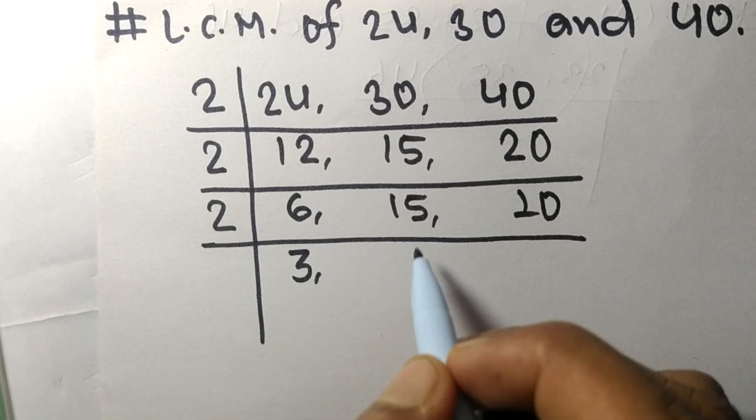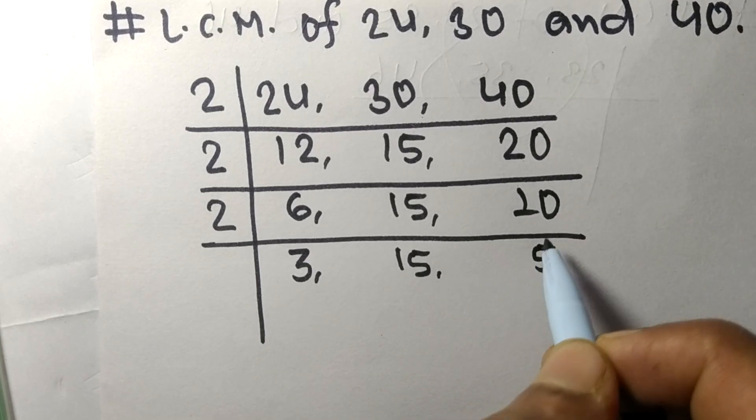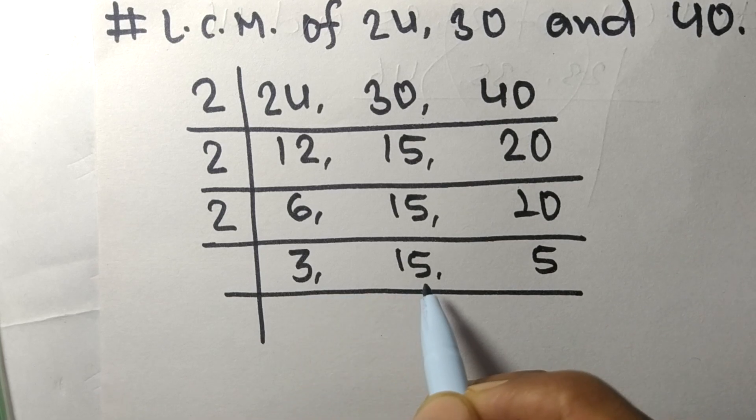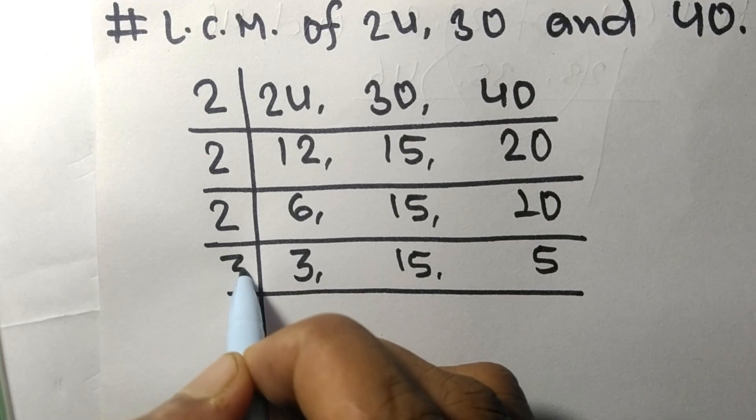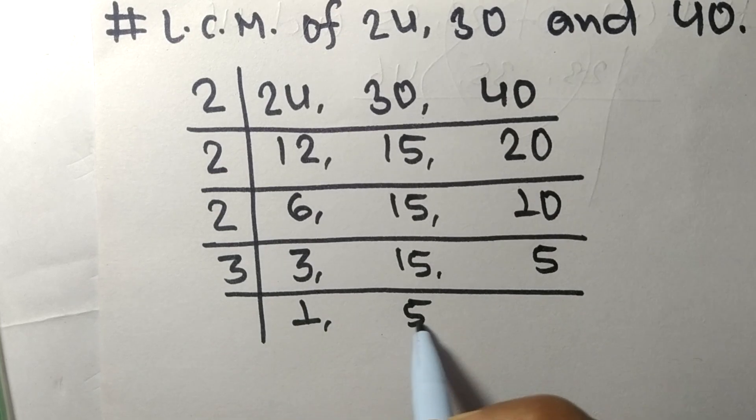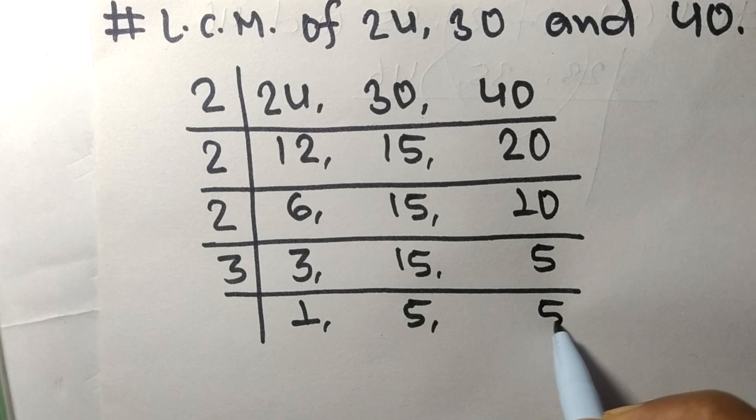Now 3 and 15 are divisible by 3. 3 times 1 means 3, 3 times 5 means 15, and 5 is not divisible so it stays the same.